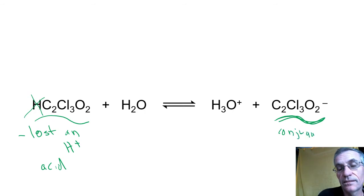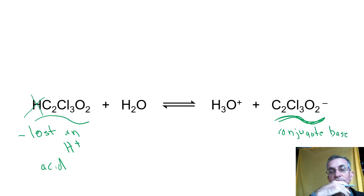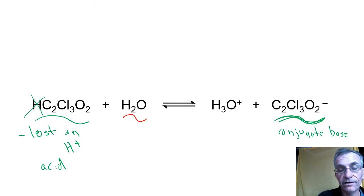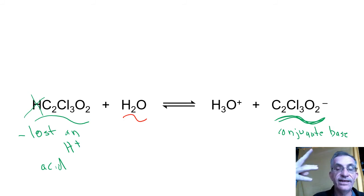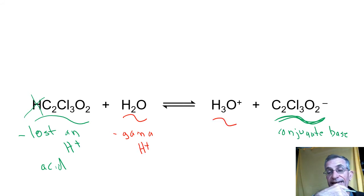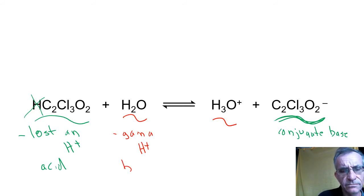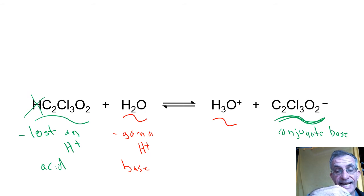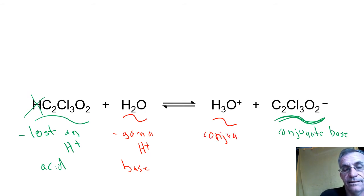Now what about water? In this reaction, water went from two hydrogens to three hydrogens — it gained a hydrogen. According to Brønsted and Lowry, if you gain a hydrogen you are the base. The thing water turns into when it gains that hydrogen is called the conjugate acid.